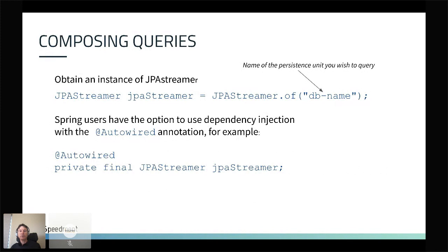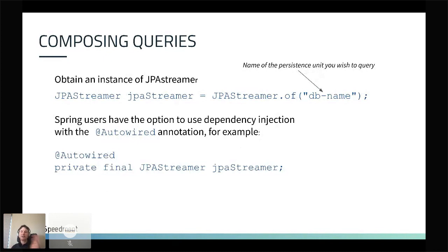So how do we do this? First, create a JPA Streamer instance — it's a factory pattern. It needs to know which persistence unit you're using, since you might have several. The persistence unit is basically a container of settings: which database, JDBC drivers, login credentials. There are also overloads using a JPA EntityManagerFactory instead. If you use Spring, you can use the @Autowired annotation to inject the instance.